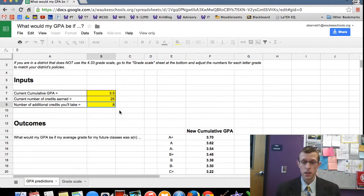So maybe they're a senior and they only have four more credits that they're going to take. This will factor in how much you've taken already, where you are, how much you have left, and where you can get.